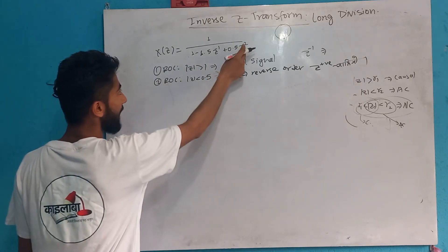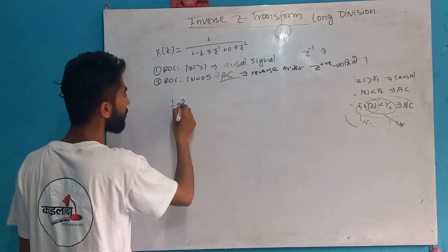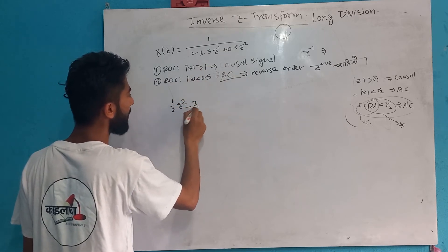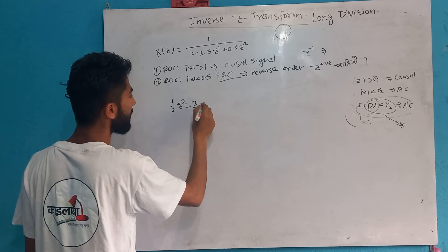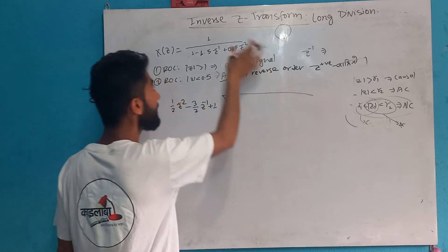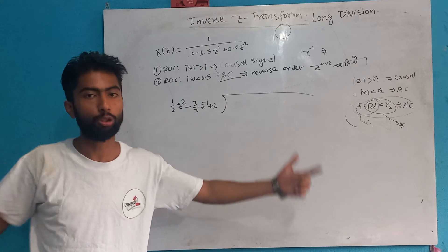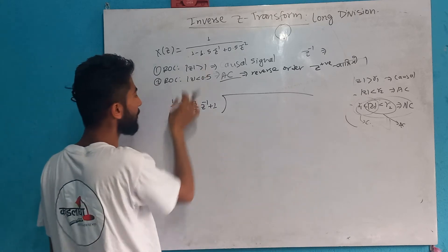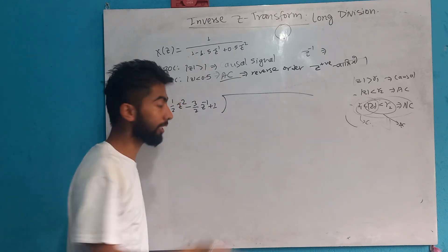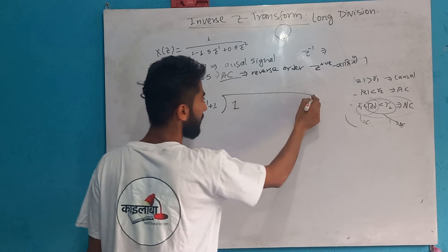Now for the anti-causal case, let's set up the polynomial. I will write: 1/2 z to the power minus 2, minus 3/2 z to the power minus 1, plus 1. I will write this in polynomial form, arranging the terms in order.